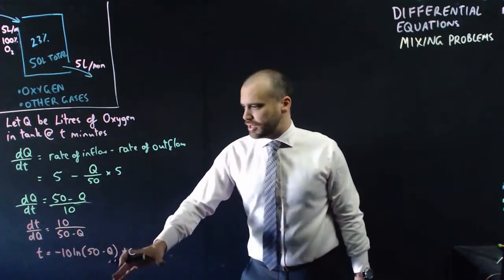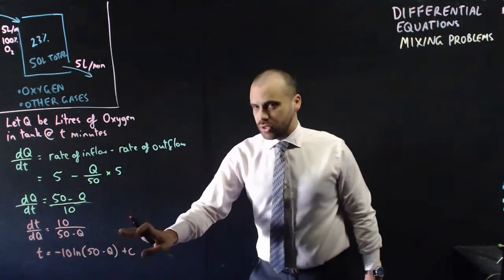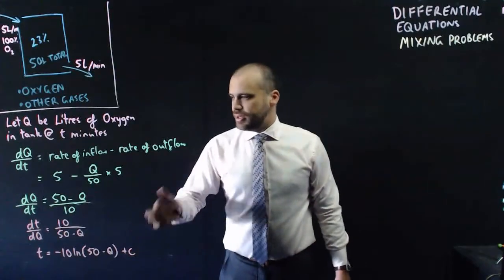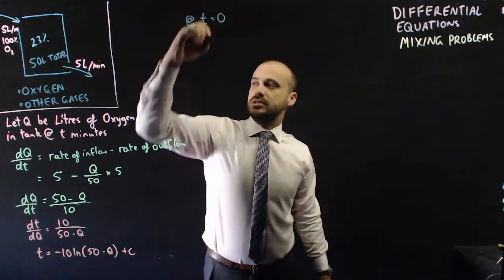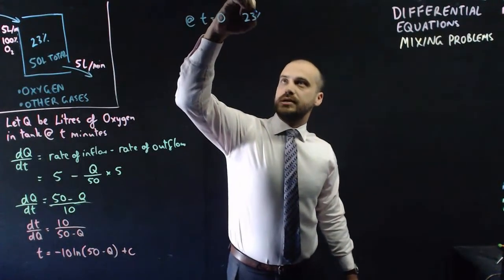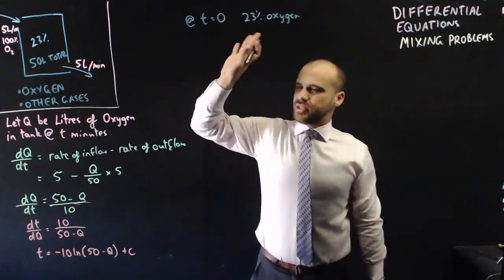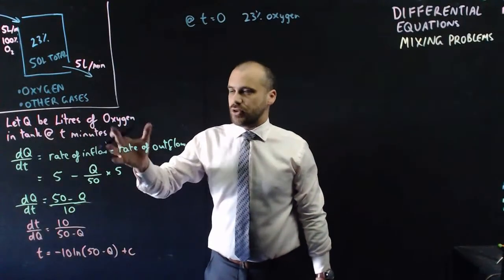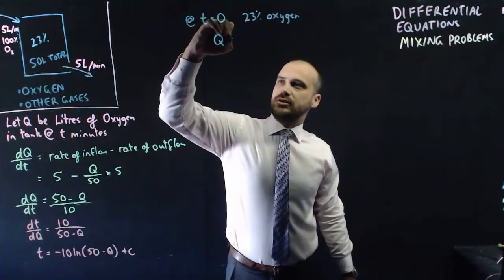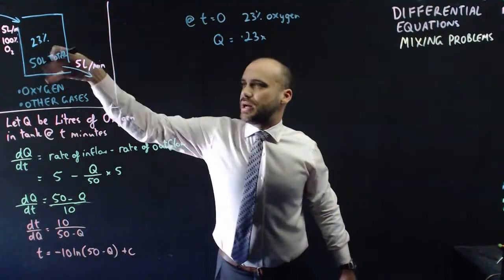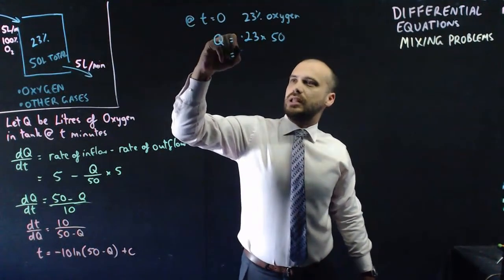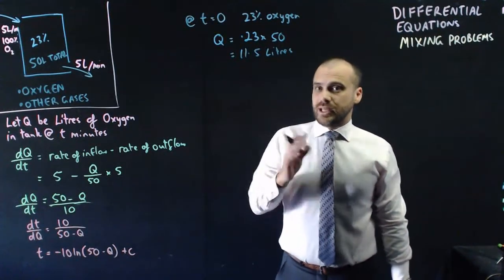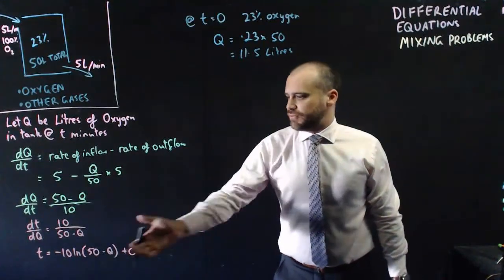All right, so we have an equation here where time is equal to this in terms of litres of oxygen plus C. And your next instinct should be to find this C value here. Now, we know that at time equals 0, it's 23% oxygen. But we ditched percentages in the beginning. We don't want to know the percentage of oxygen. We want to know the actual litres of oxygen. So Q at time 0 is equal to 0.23 times 50, which is 11.5 litres. So, at time 0, Q is equal to 11.5, and that information is going to be enough for us to be able to find C.